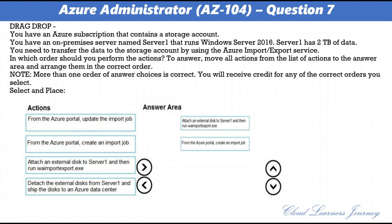Second action: from the Azure portal, create an import job in your target storage account and upload the drive journal files. Third action: detach the external disk from Server1 and ship the disk to an Azure data center, providing the return address and carrier account number. Fourth action: from the Azure portal, update the import job with the delivery tracking number and submit. The drives are received, processed, and shipped back using your carrier account to the return address provided.